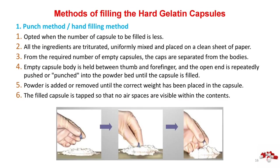Punch method/hand filling method: opted when the number of capsules to be filled is small. All ingredients are triturated, uniformly mixed and placed on a clean sheet of paper. From the required number of empty capsules, the caps are separated from the bodies. The empty capsule body is held between thumb and forefinger, and the open end is repeatedly pushed or punched into the powder bed until the capsule is filled. Powder is added or removed until the correct weight is achieved. The filled capsule is tapped so that no air spaces are visible within the contents.